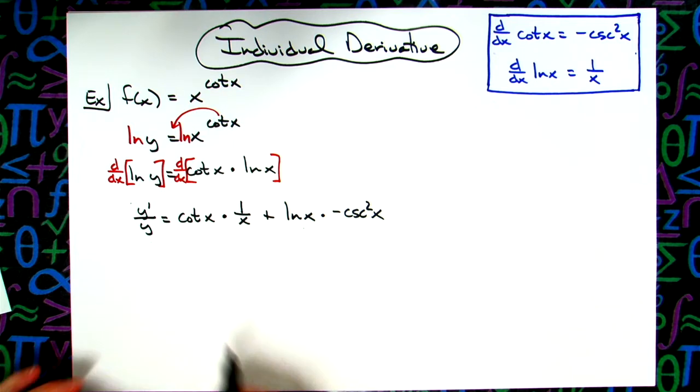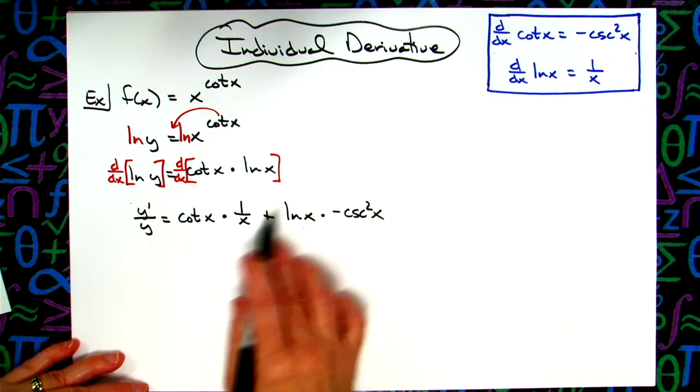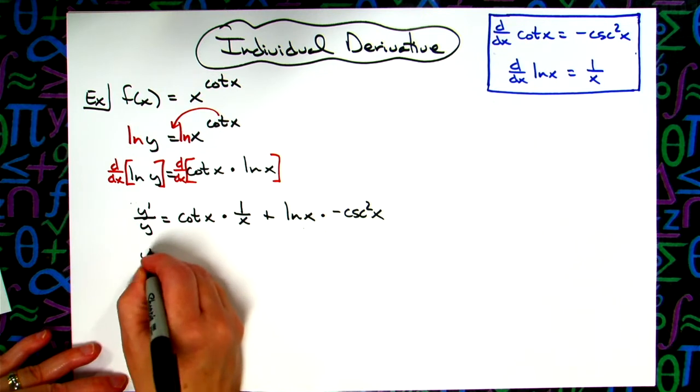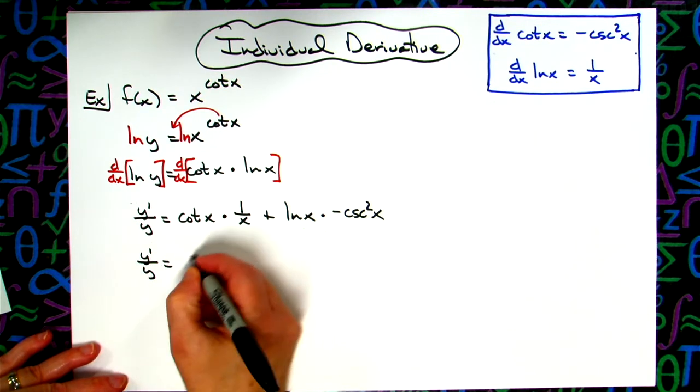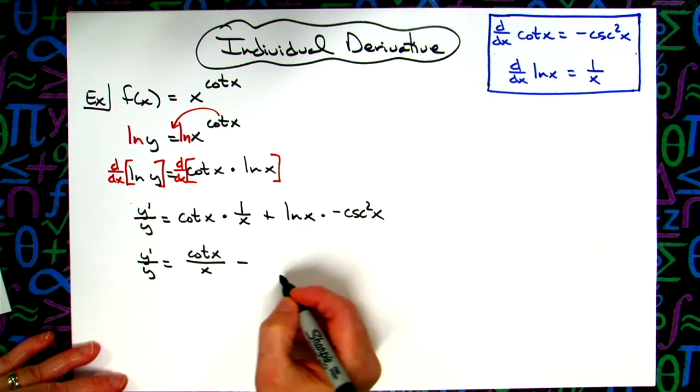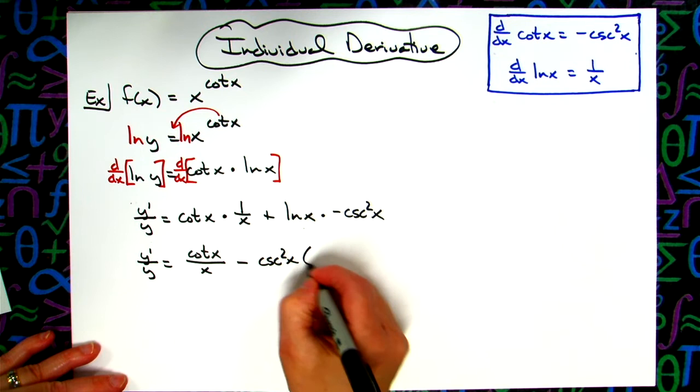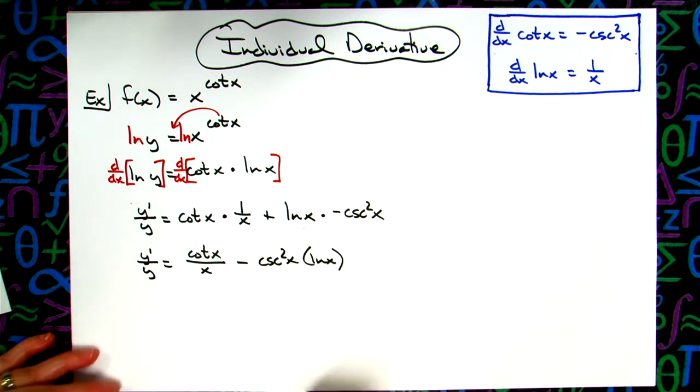Now to clean this up a little bit. We'll go ahead and put this over x and make this a subtraction. So we'll have y'/y = cot(x)/x - csc²(x)·ln(x).